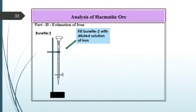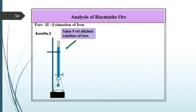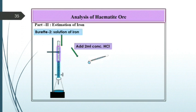Now Part 2, estimation of iron. To estimate the iron, fill burette number 2 with diluted solution of iron, then take 9 ml diluted solution of iron in a clean and dry conical flask. Add to this solution 2 ml concentrated HCl.